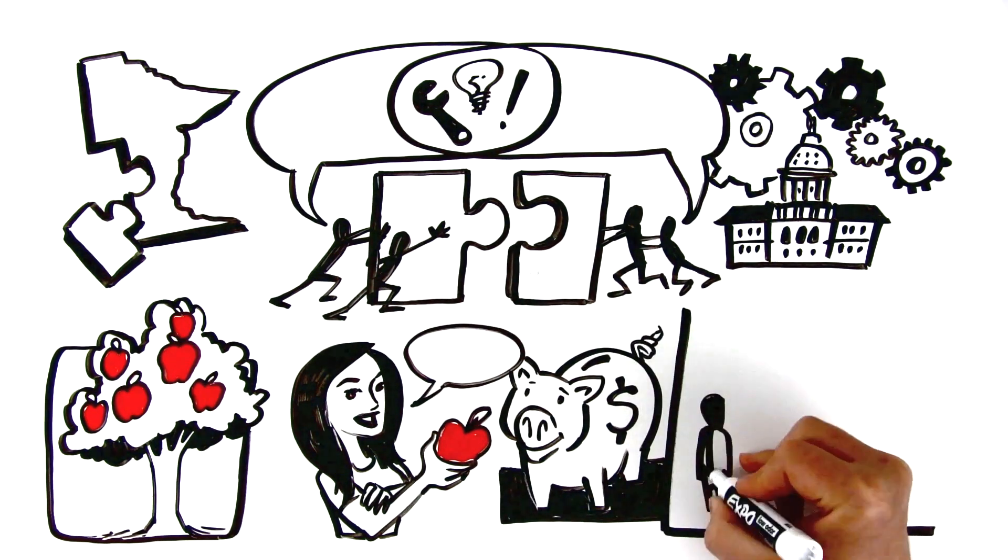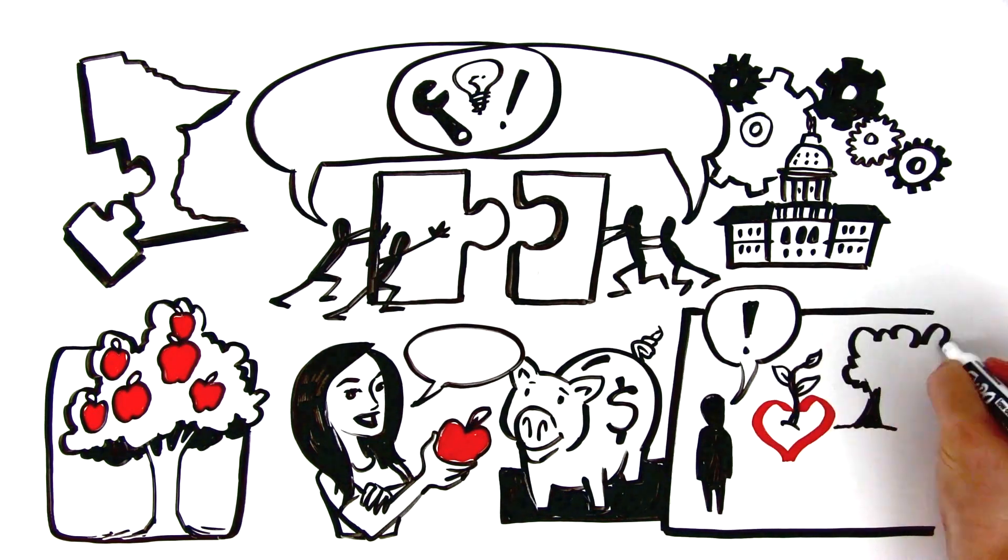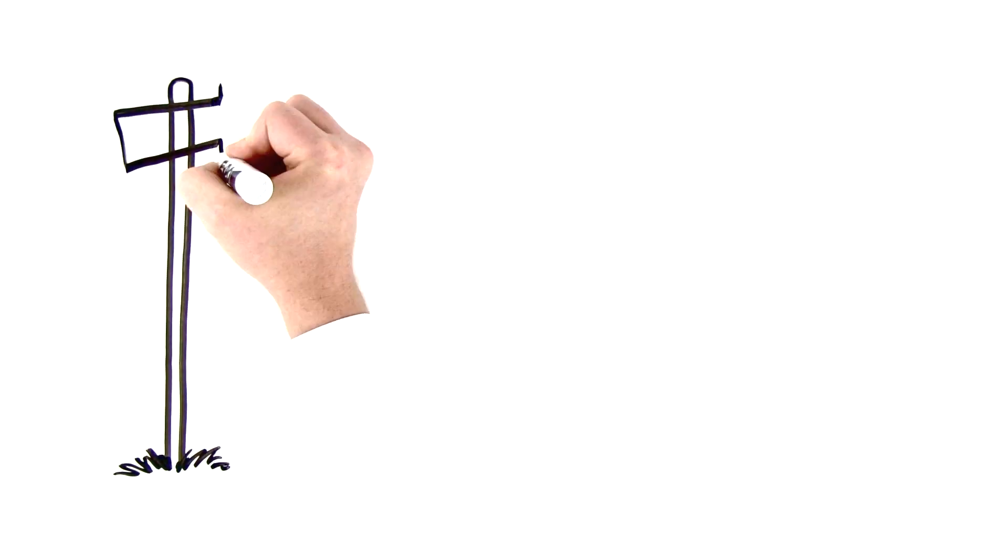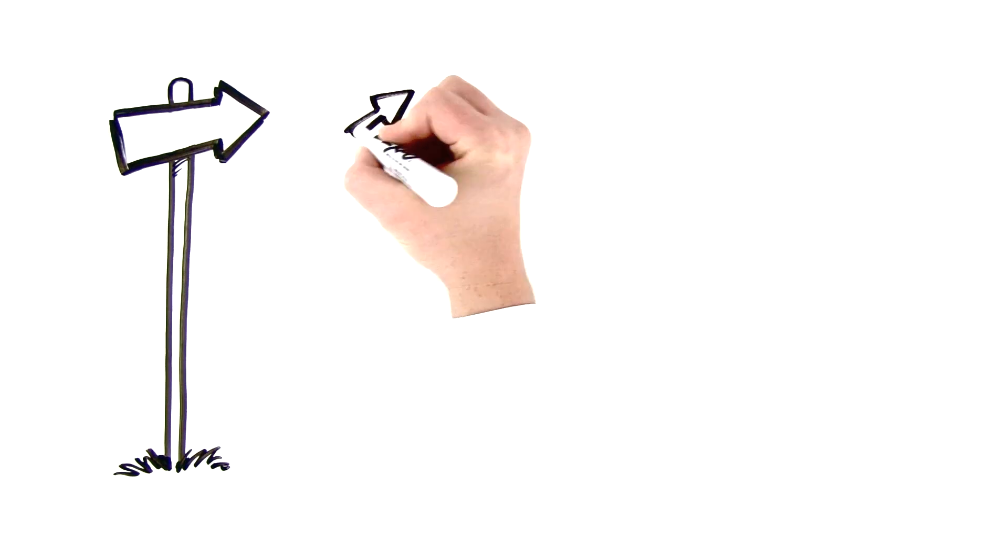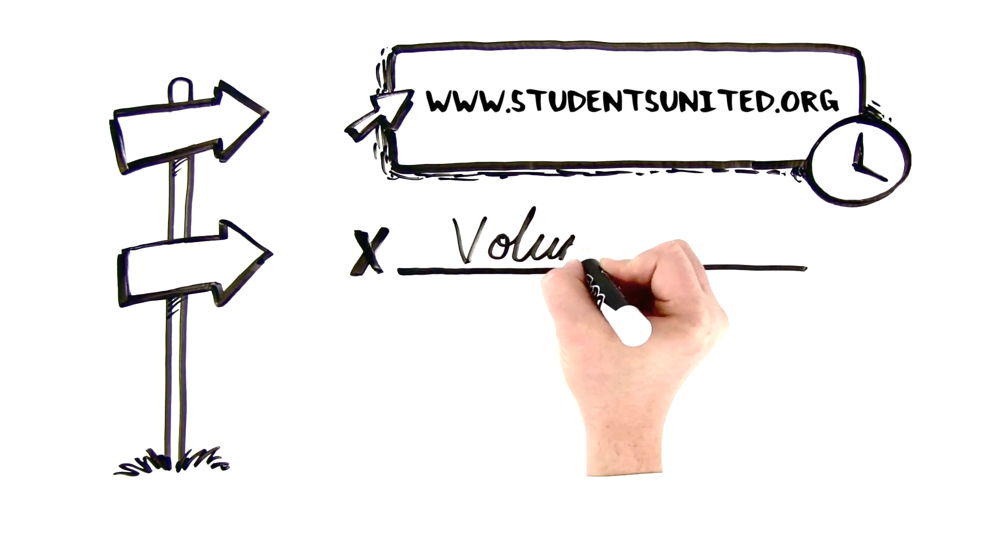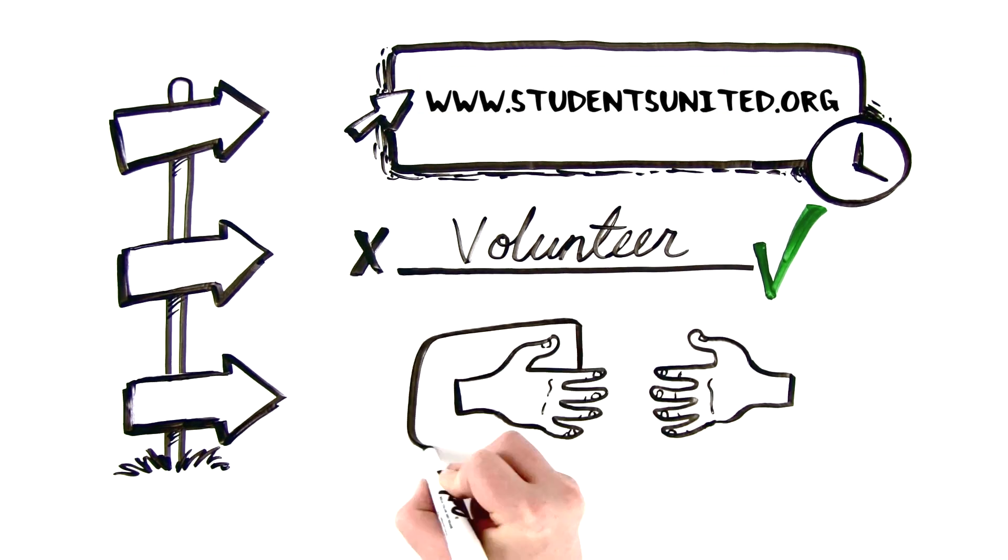Do you want to have a voice as a student? Are you passionate about making a difference now and in the future? Do you want input about the policies that affect your everyday life as a college student? There are a number of ways to get involved. First, visit our website at studentsunited.org and sign up for our monthly updates. Second, sign up to volunteer. Third, reach out to your campus committee to get more involved on your campus.